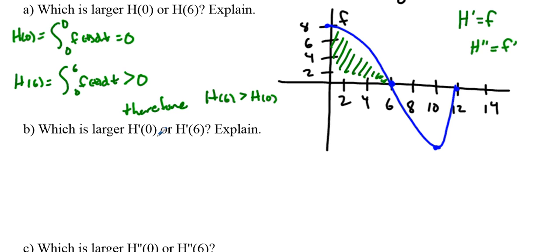Let's try another one. We know h prime of 0 and h prime of 6. Well, h prime of 0 equals f of 0, which we can see on this graph right here, f of 0 equals 8. We also know that h prime of 6 should equal f of 6. We can look at this graph and see that f of 6 equals 0.